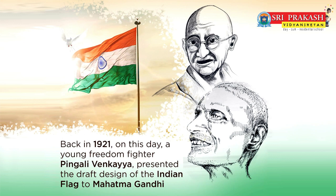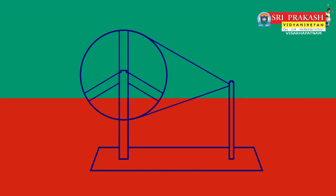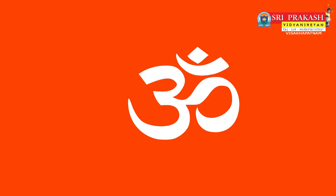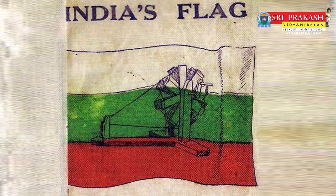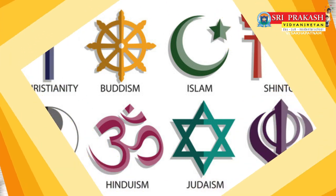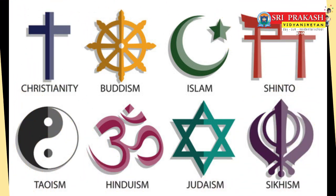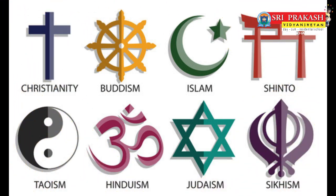Venkaiya's first draft of the flag was in red and green — the red representing Hindus and green representing the Muslims living in the country. On Gandhi's suggestion, Venkaiya added a white stripe to represent all other denominations and religions present in India.